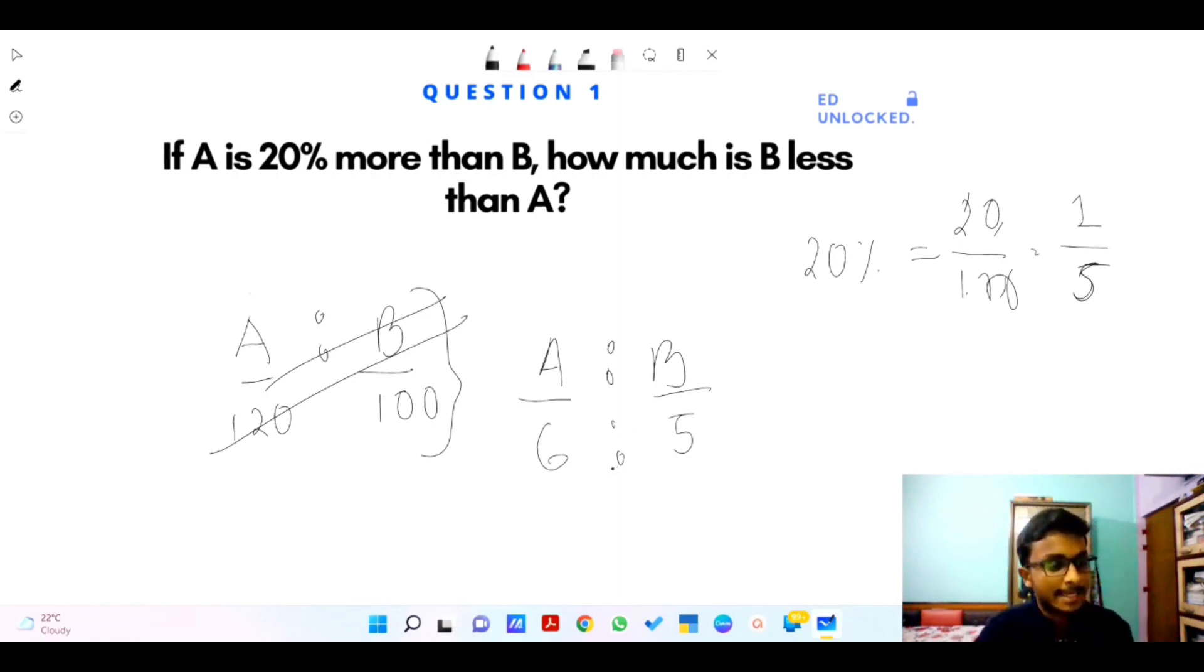How much is B less than A? B is less than A. So our base is A, which is 6. How much is B less than A? Six minus one is one difference. So one divided by 6 into 100 gives 16.67.